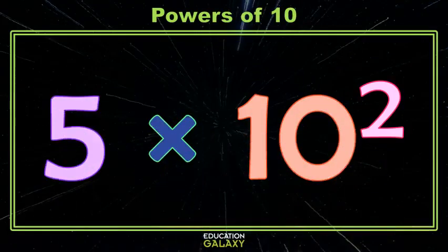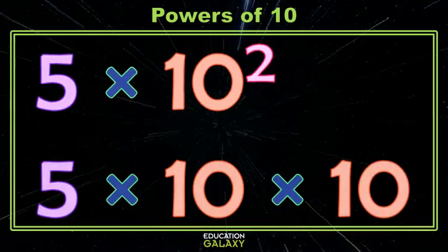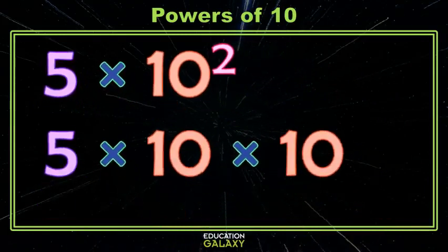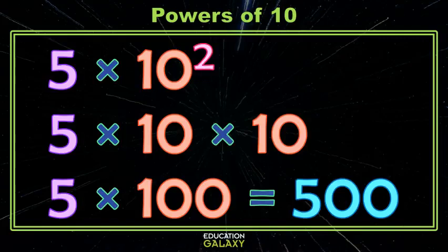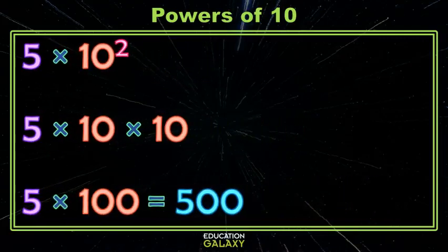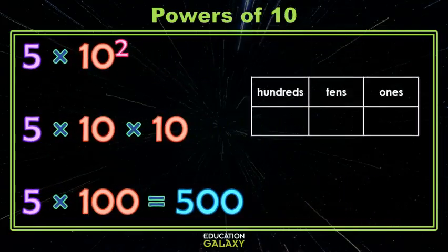Let's try an example. Here I have 5 times 10 squared, which means I have 5 times 2 tens, or 5 times 100, which I know is 500. But today we're kind of looking for a shortcut to solve these problems, so let's take a look at our place values.